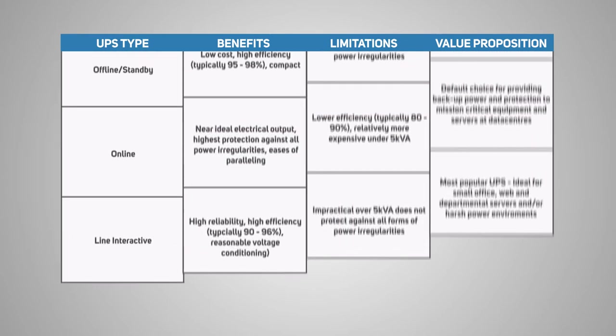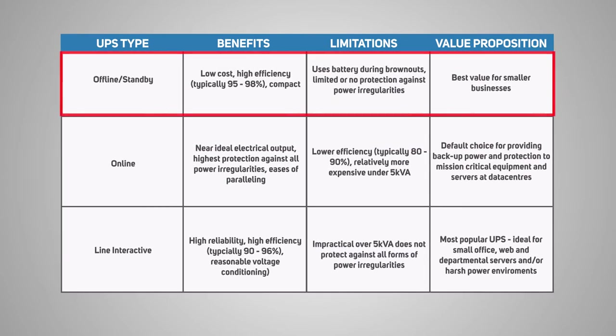The offline standby UPS is the most basic out of the three. It provides light surge protection and battery backup during normal operations. It gets its power from the main power source, generally an AC outlet. Once it senses that the main power source goes beyond acceptable limits or fails, it switches to the offline standby battery where it'll then go to the DC-AC inverter. As such, there'll be a small transfer time between the main power source and the battery.